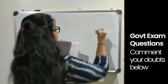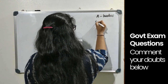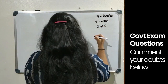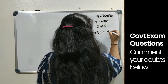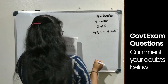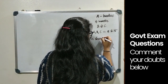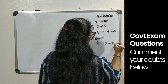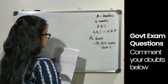A started a business. After 4 months, B and C joined. The investment of A, B and C is in the ratio 4:6:5. If A's share in the annual profit was Rs.250 more than C's share, what is the total annual profit earned?